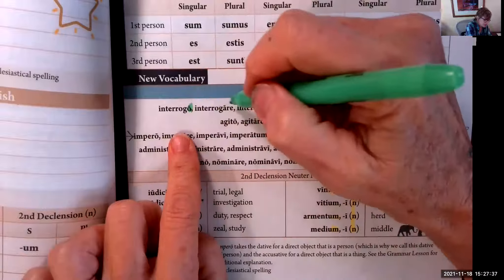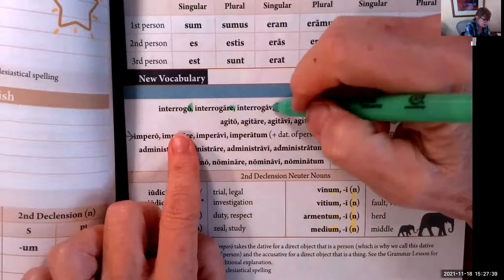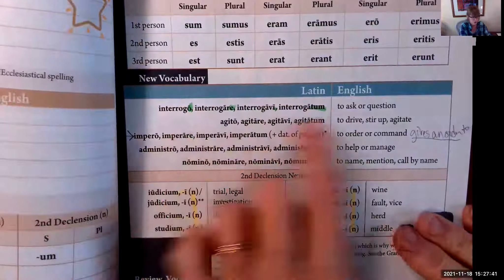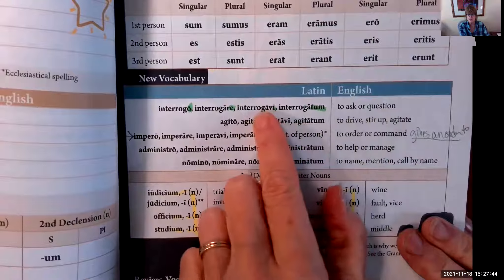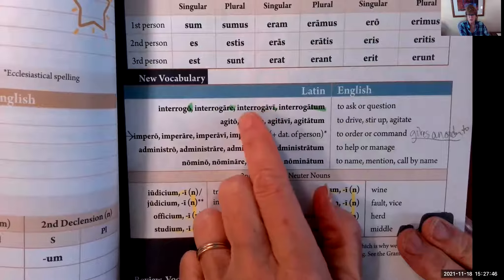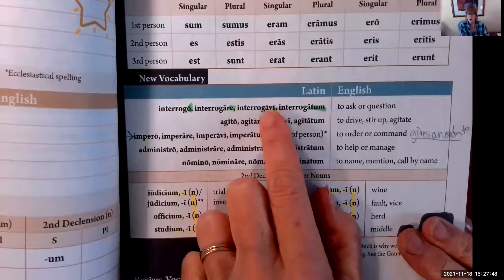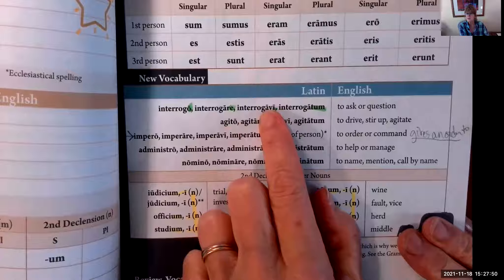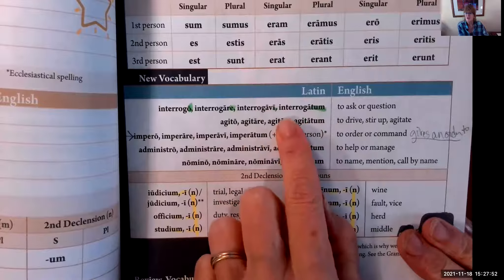Interrogo, interrogare, interrogavi, interrogatum—to ask or question. You can see 'rogo' in there. 'Inter' is between. An interrogative sentence is a question.